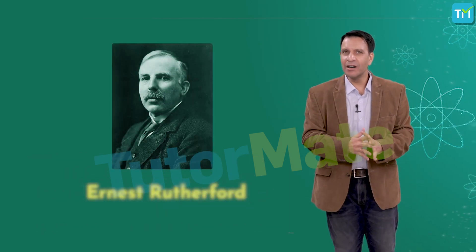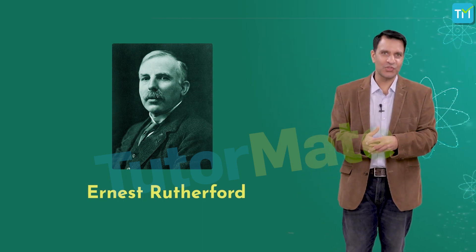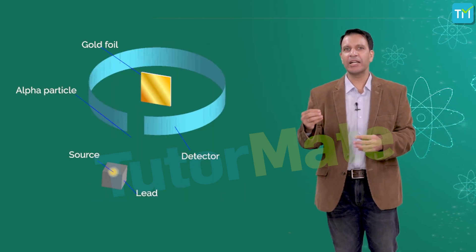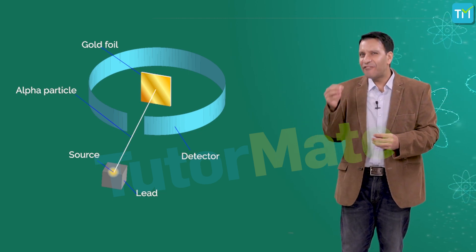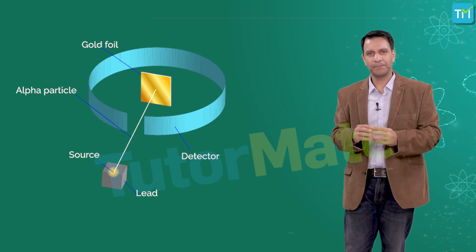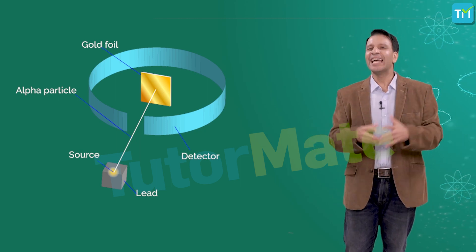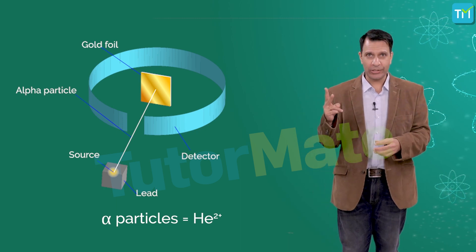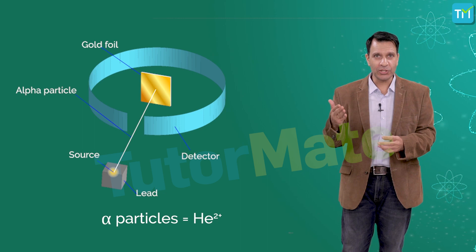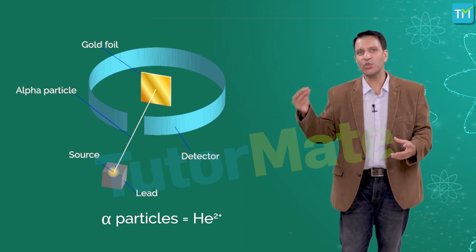A few years later, Ernest Rutherford — one of Thomson's students — ran tests on the plum pudding model. He fired a beam of positively charged particles called alpha particles at a very thin sheet of gold foil. An alpha particle is a positively charged particle having two units of positive charge and four units of mass — it is actually a helium ion with a plus-two charge.